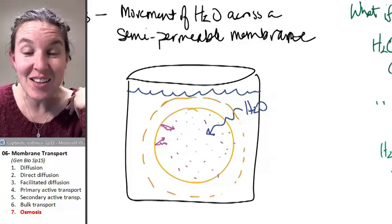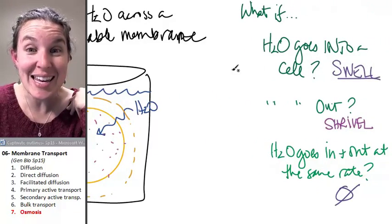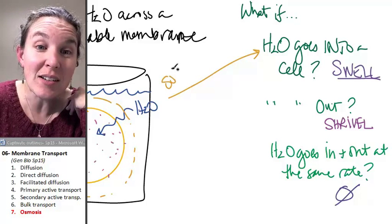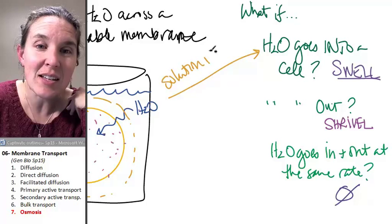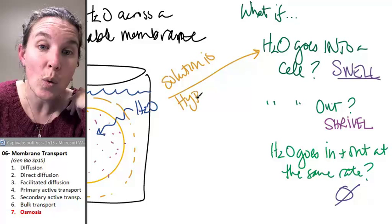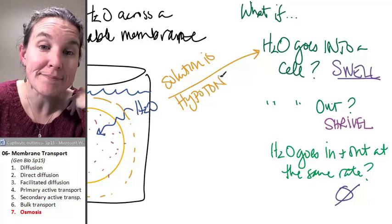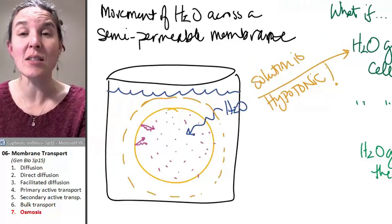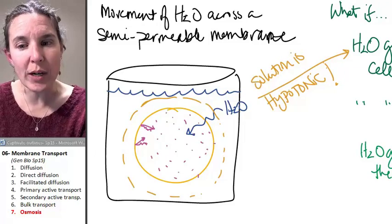If the cell swells in a solution, the solution, I love this, is hypotonic. And we're going to be able to see this. We're actually going to cause cells to swell, and we're going to cause them to shrink.